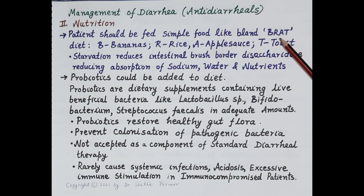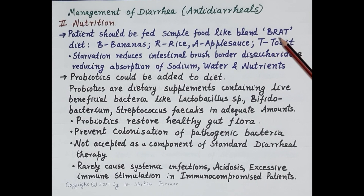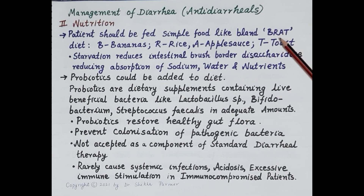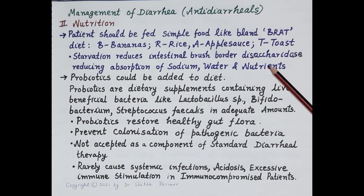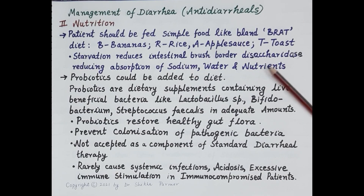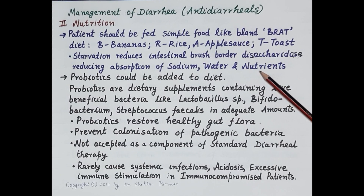Patients should be fed with simple low fiber food — a bland BRAT diet — where B stands for bananas, R for rice (white rice), A for applesauce, and T for toast (white toast). Starvation reduces intestinal brush border disaccharidase enzymes, thereby reducing absorption of sodium, water, and nutrients, which may lead to malnutrition. Therefore, patients should not be starved.